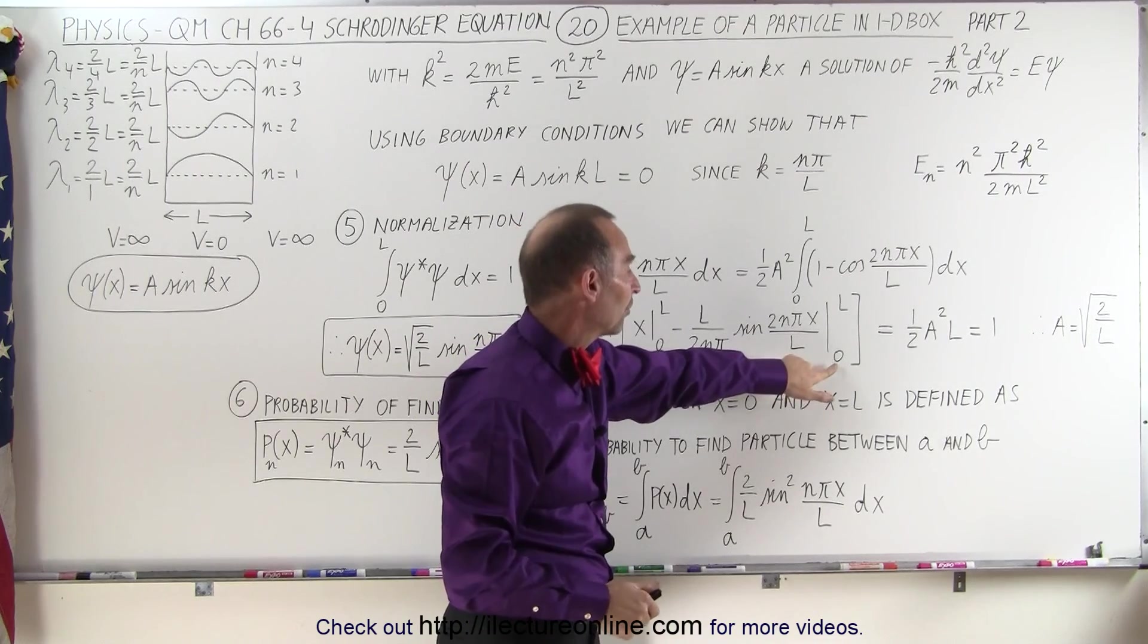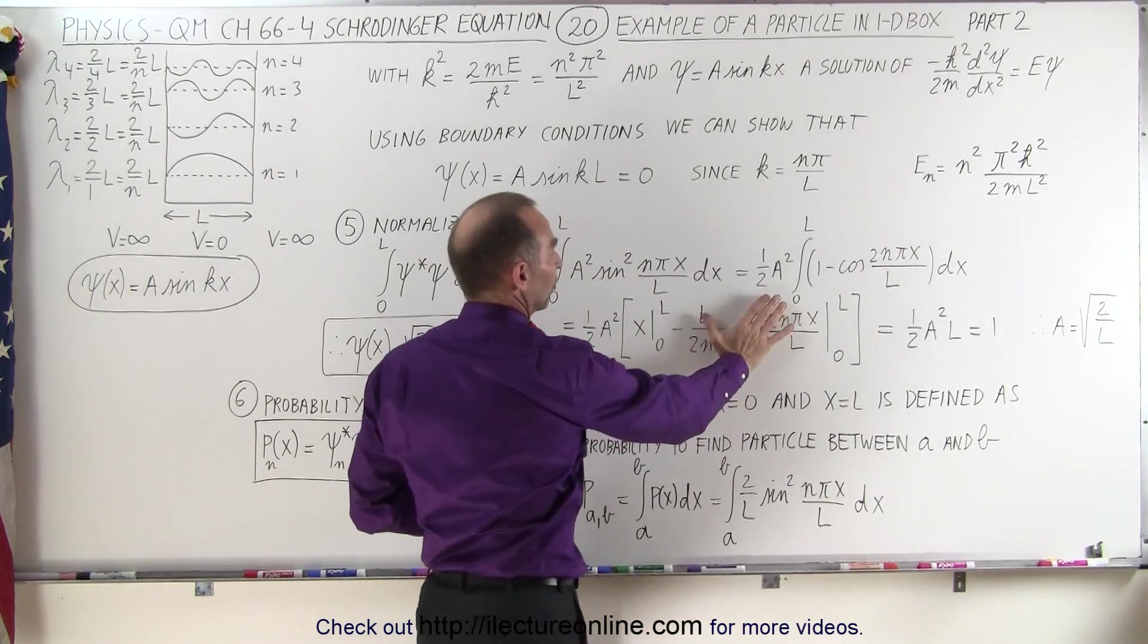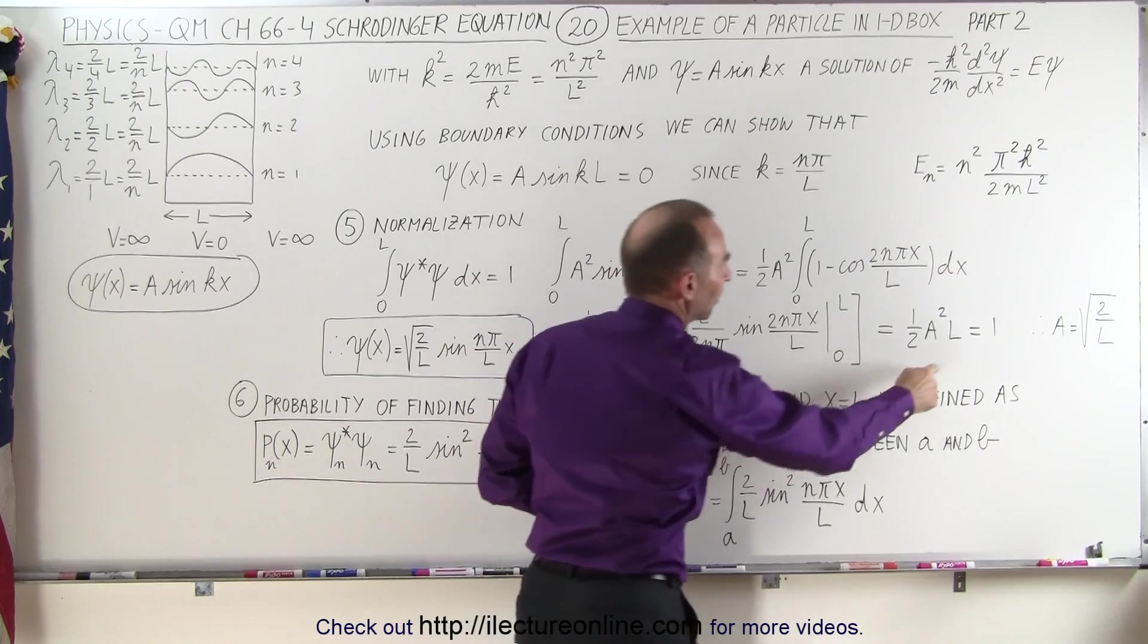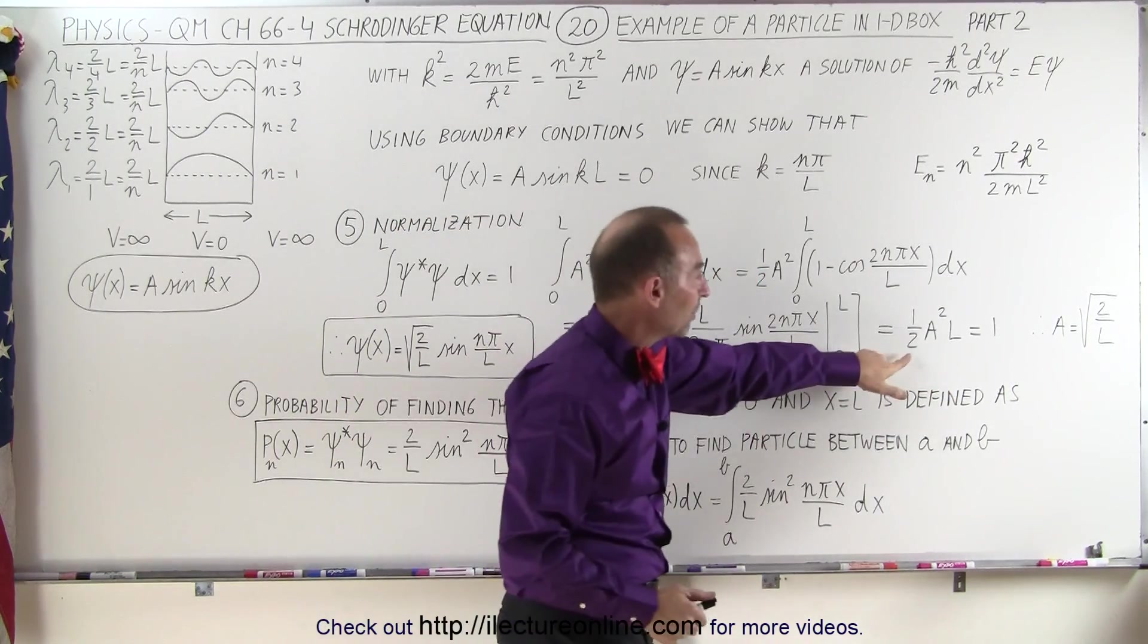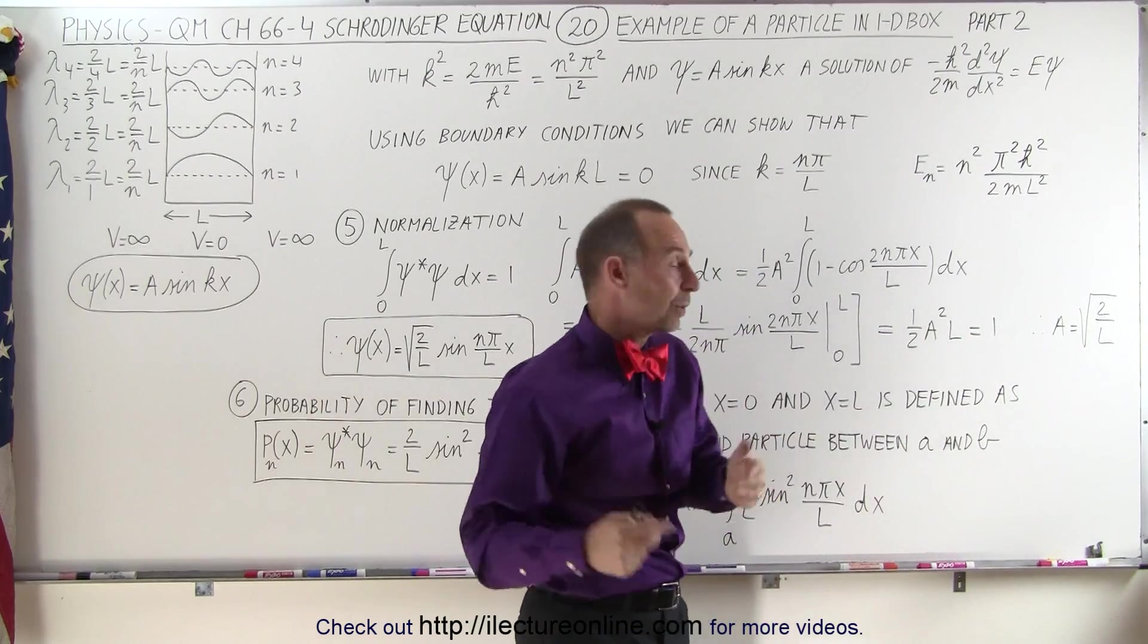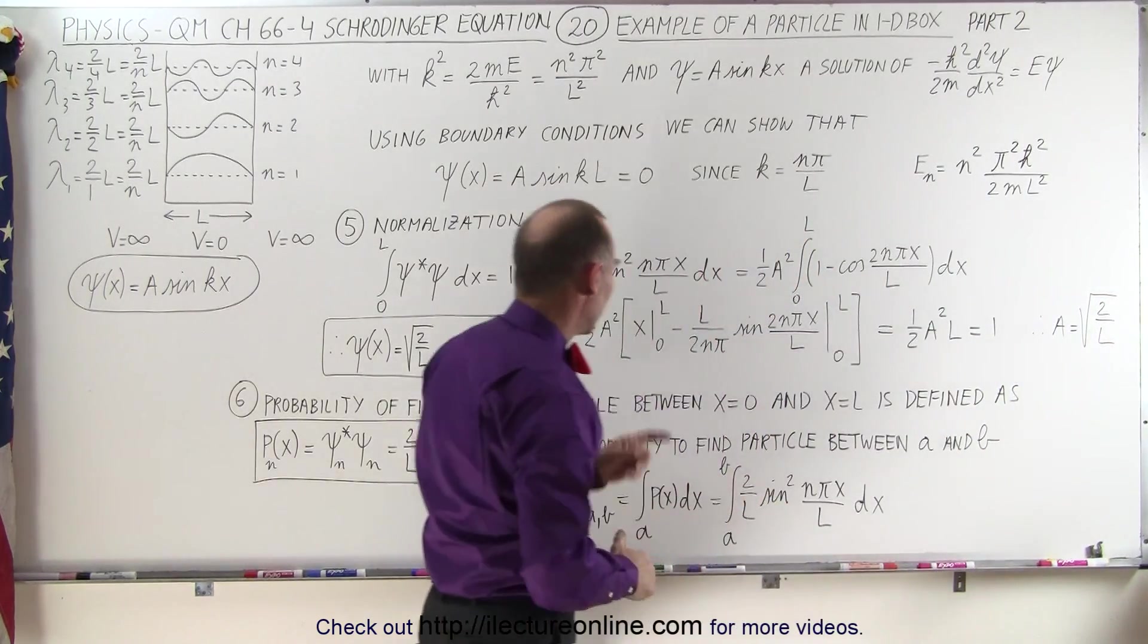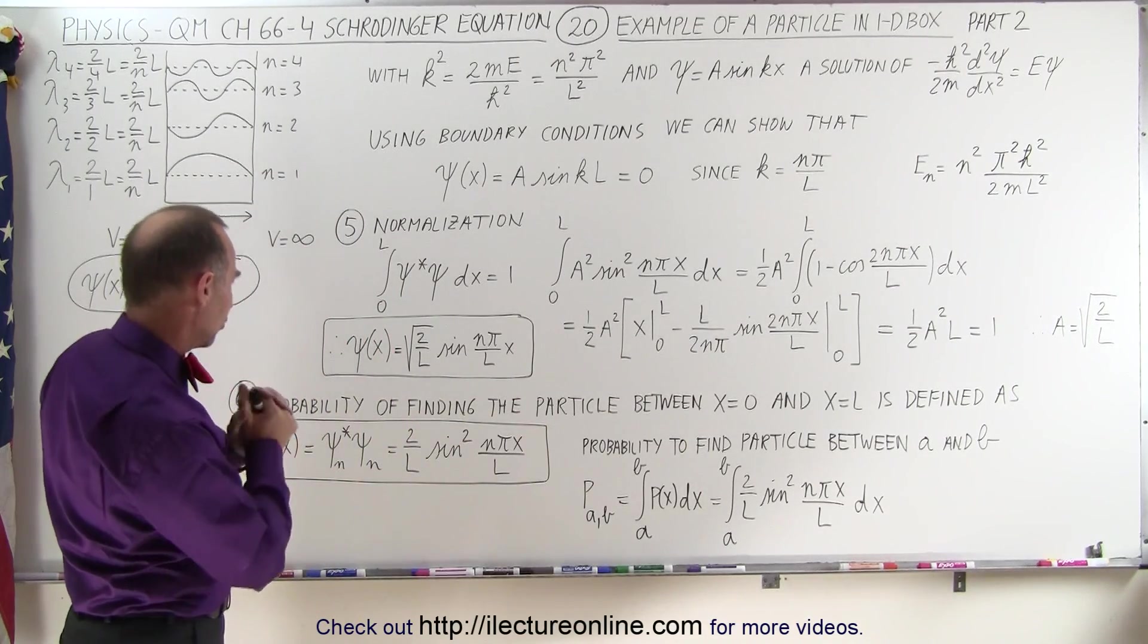And we're only left with x evaluated between zero and l, which means that x will be replaced by l. Which means that this integral simply turns out to be one-half a squared l, which must equal one, and from that we can conclude that the constant a is equal to the square root of two divided by l, for solving this for a. We then take that and we plug that into our equation.